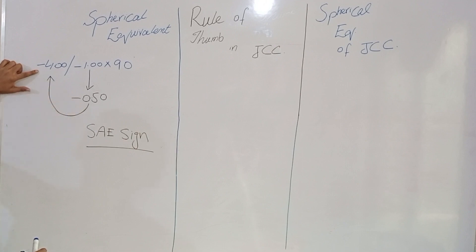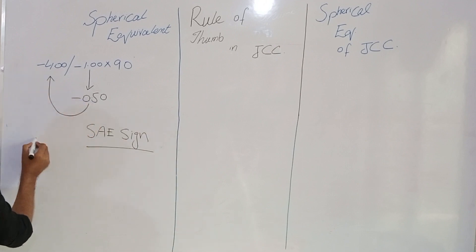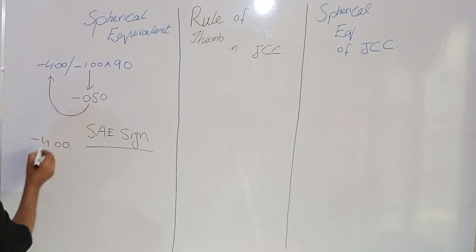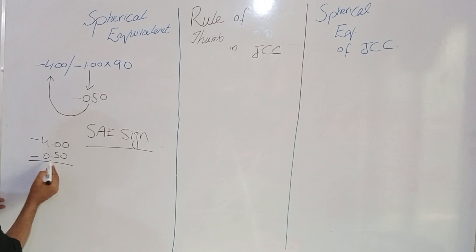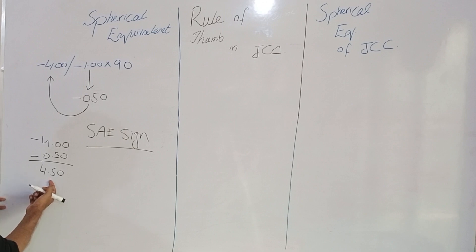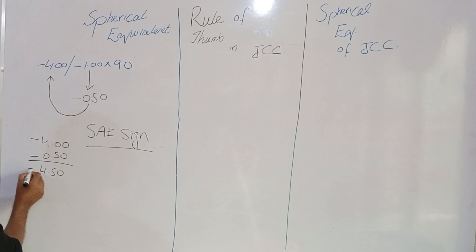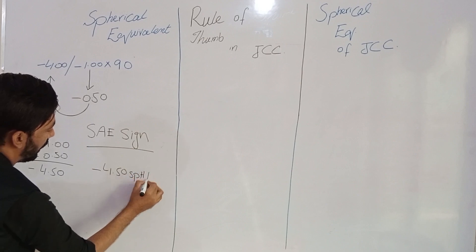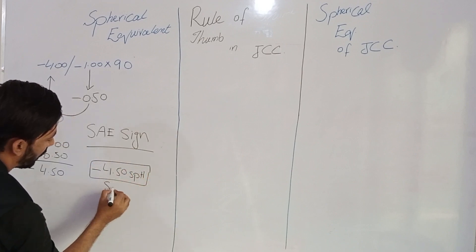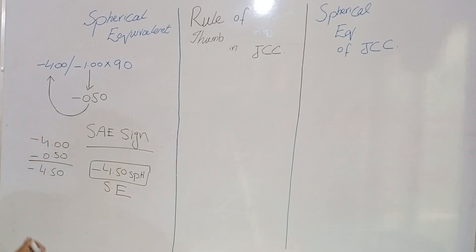So when we add minus four spherical plus minus 0.50, minus and minus gives plus, so four and 0.5 becomes 4.5. The bigger value has the minus sign, so our result is minus 4.50 spherical — this is our spherical equivalent.